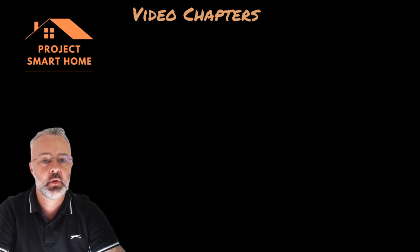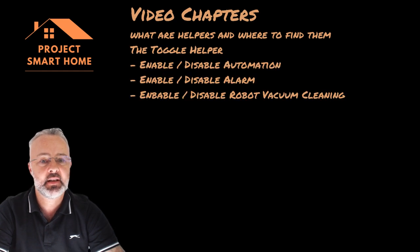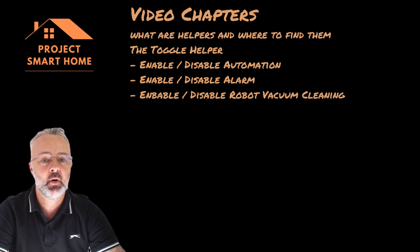I'm going to start off by giving you an overview of what a Home Assistant helper is, and then talk about four helpers that I use in a lot of my automations. The first one being the toggle helper, which I use to enable and disable various automations, alarms, and even my robot vacuum cleaning automations.